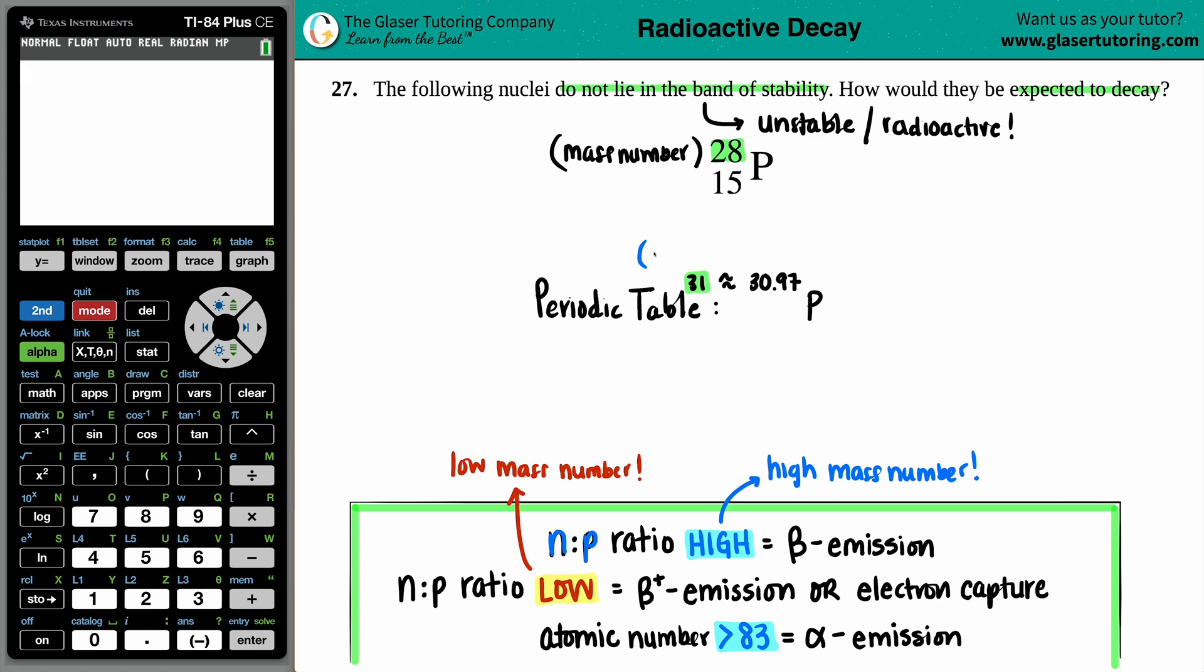But now our nuclide has a mass number of 28. Phosphorus generally wants to be 31, so now I can put it into perspective that this 28 is a low mass number. And low mass numbers, low n:p ratios, are going to become stable by either putting out a positron into the world or an electron capture, meaning they're going to take an electron.